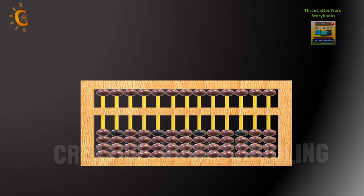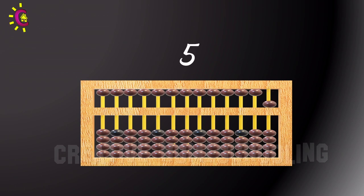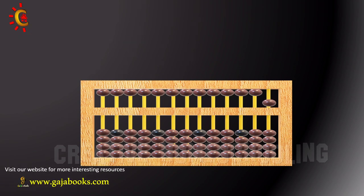Each of the one unit beads below the beam obtains its value when moved up towards the beam and loses its value when moved back down to its former position. On the other hand, each of the five unit beads above the beam obtains its value when moved down to the beam and loses its value when moved up.